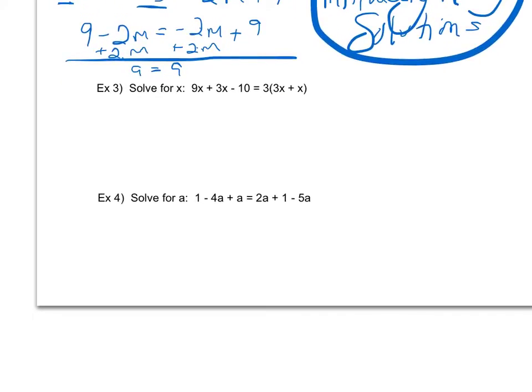So example 3, I'll start by distributing because I see I have a 3 to distribute over here. I also see I have some like terms on the left, so I'm going to go ahead and combine my like terms on the left. They're on the same side, so I'm just going to combine them. I'm not going to change any signs.